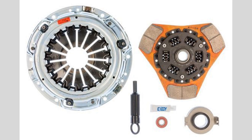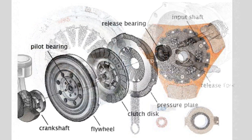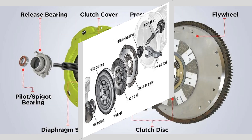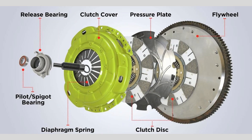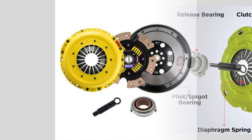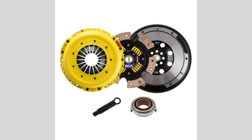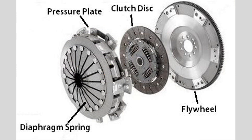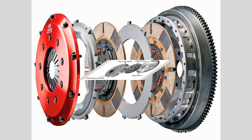Clutch Operation. To understand how the clutch works, let's walk through the process of engaging and disengaging the transmission. There are three main stages: clutch pedal up — engaged; clutch pedal down — disengaged but not fully pressed; and clutch pedal fully pressed — disengaged.